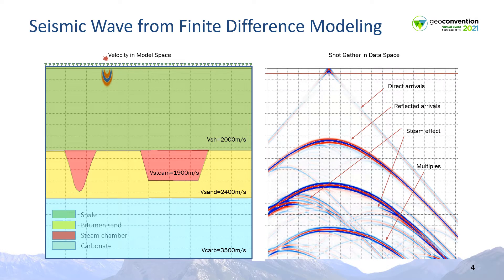We first tested the FWI process on a synthetic 2D dataset using appropriate rock and steam chamber velocities. This included a blind test where we embedded various steam chamber geometries in a dataset sent to the processor without providing any information. The test was very successful, which led to applying FWI on a 4D field program.